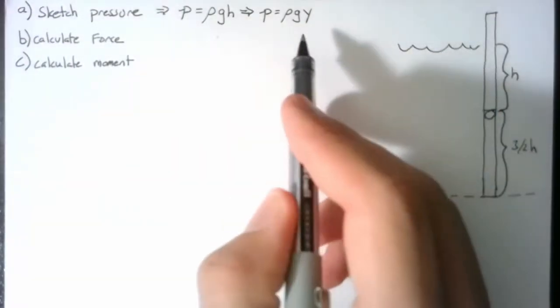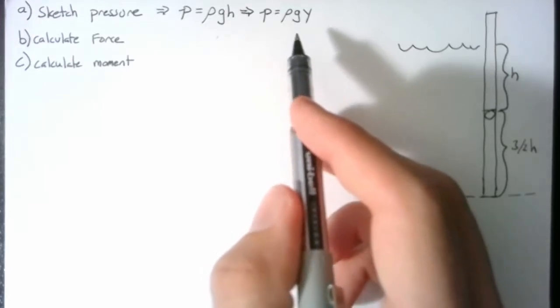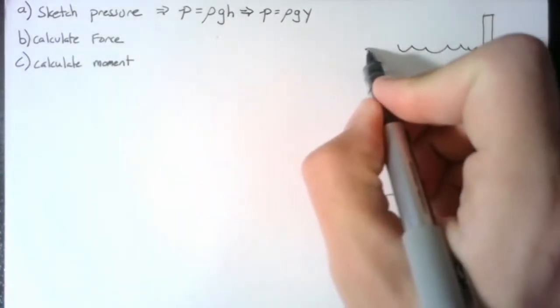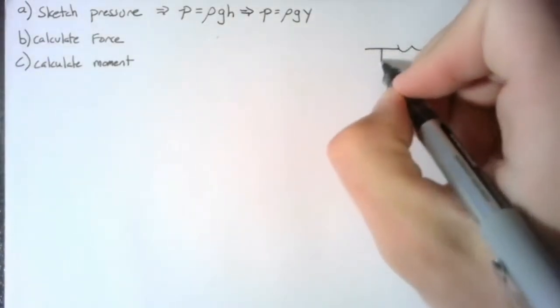So the first step for any problem is going to be to define the coordinates that we're going to be using. So I'm going to choose y equals 0 to be equal with my water level, and to be positive downwards.